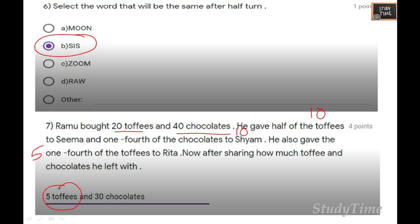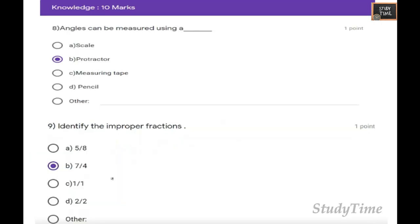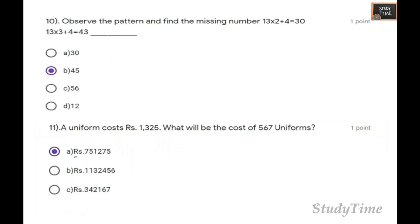Angles can be measured using a protractor. If they ask angles are measured in which unit, you have to write degrees. Identify the improper fraction. The improper fraction will have denominator less than the numerator. The answer is 7 by 4.